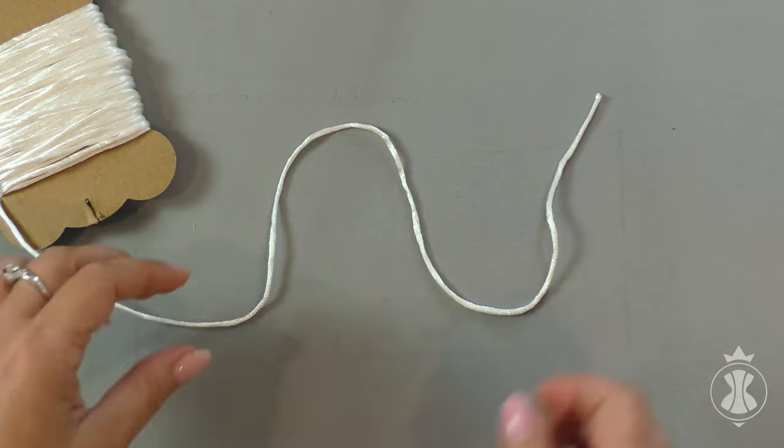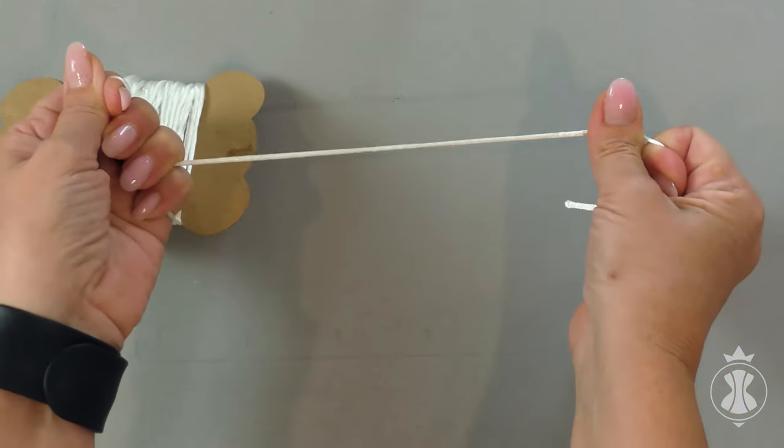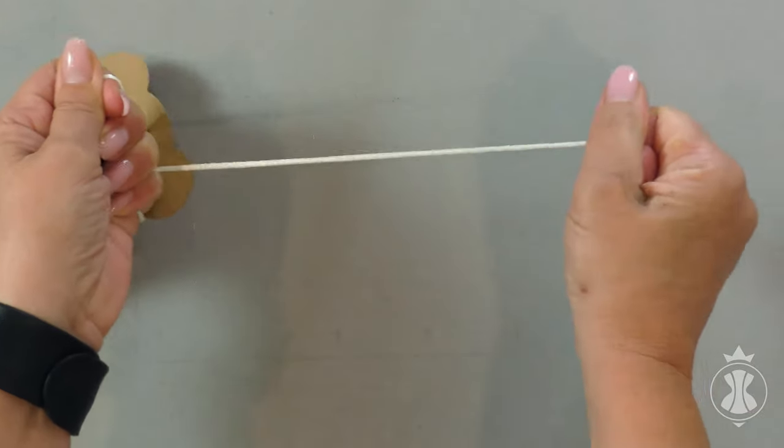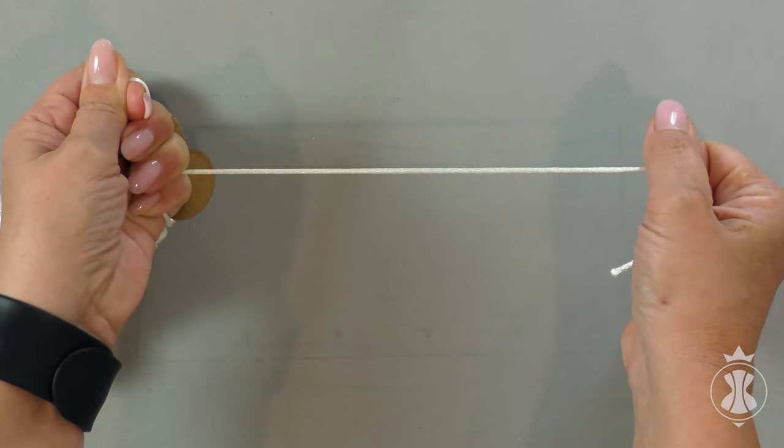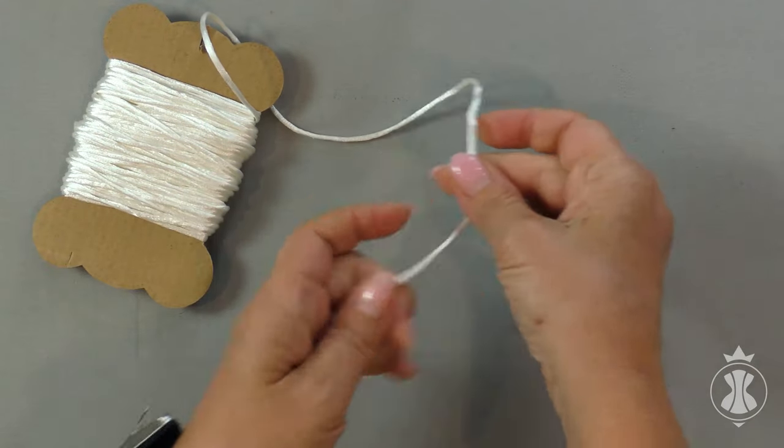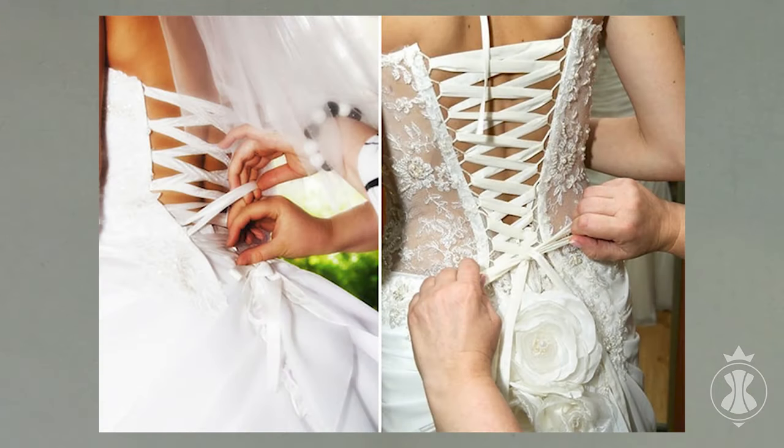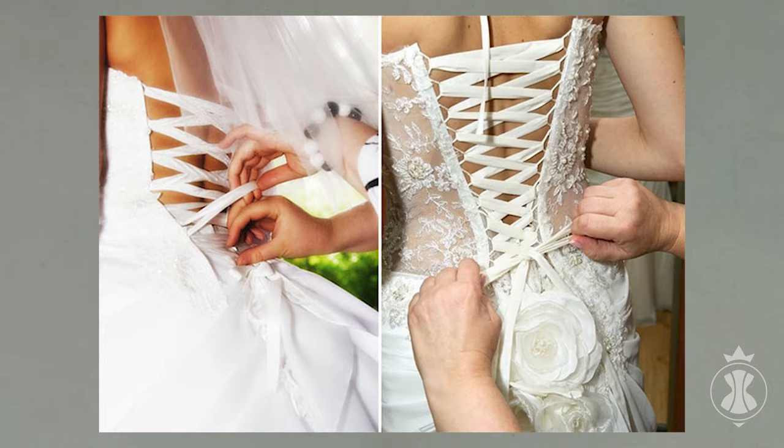Air-loops for a corset lacing are made only from non-stretchable cords or ribbons. It is strictly forbidden to use different types of rubber bands. I will use a ready-made silk cord with a diameter of 3 or 4 millimeters. There is a huge variety of shapes and sizes of air-loops.